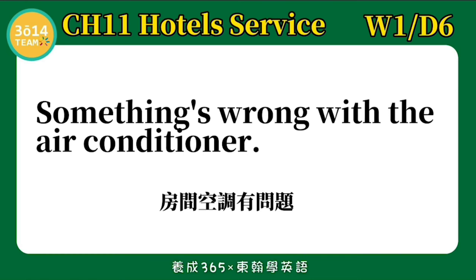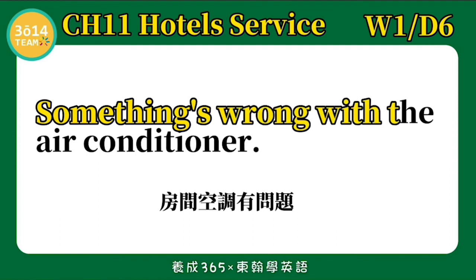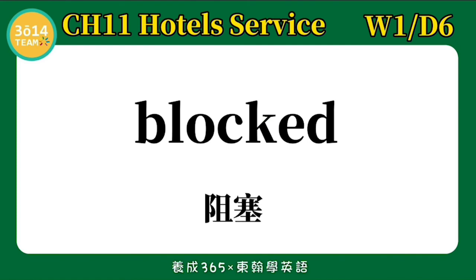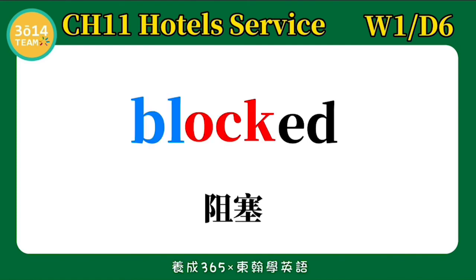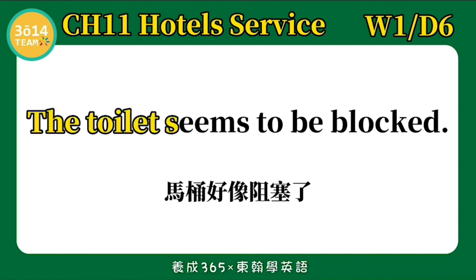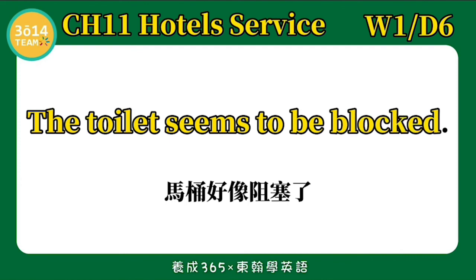Something's wrong with the air conditioner. 房间空调有问题。跟着我念一次：Something's wrong with the air conditioner. Blocked 阻塞。BL 我们念 BLOCK，OCK 念 ARK，ED 放在 K 的后面，我们会发 T 的音：BLOCKED. The toilet seems to be blocked. 马桶好像阻塞了。跟着我念一次：The toilet seems to be blocked.